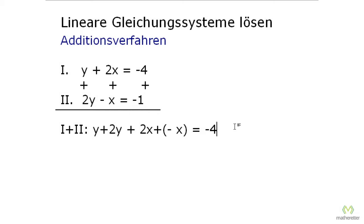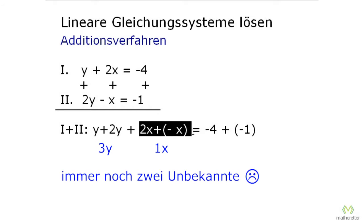And here the minus 4 plus the minus 1. And if we simplify that, we have 3y here and x here, and we would still have both variables. The goal, however, is to eliminate one of them, so that we can calculate whichever one is left.